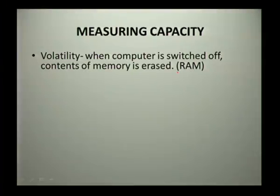Now let's look at the volatility of RAM. When we say RAM is volatile, we mean that when your computer is switched off, the contents of the memory are erased. RAM will only function when your computer is switched on. So even though it is part of storage, it only works while the computer is on.